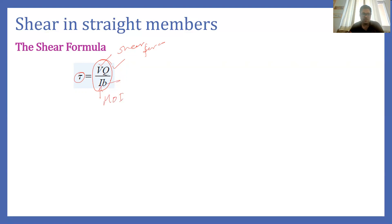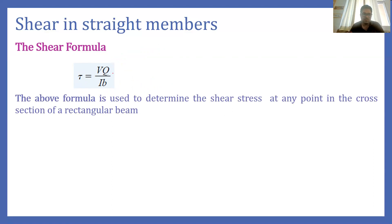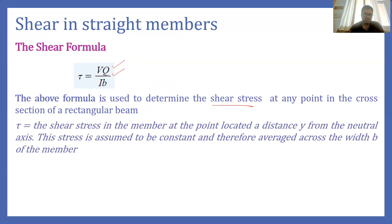In the shear formula tau = VQ / Ib, I is the moment of inertia and b is the width of the beam. Q is the moment of the cross-sectional area above the point where we are required to find out the shear stress. T is the shear stress at the point located at a distance Y from the neutral axis.